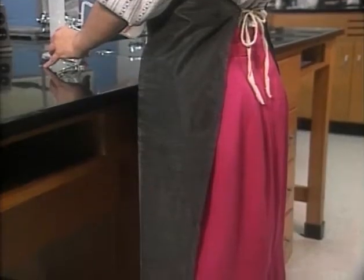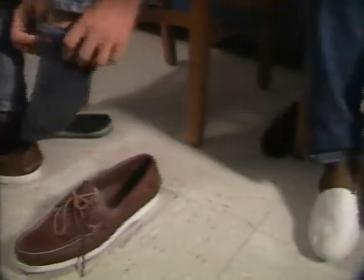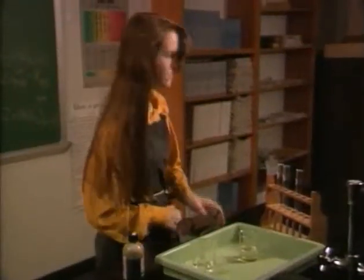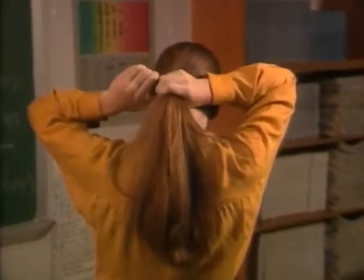Legs are vulnerable to chemical splashes and broken glass if you drop something, so long pants or a long skirt should be worn to protect them. Open shoes can't protect your feet from spills — closed leather shoes are much better. Shoes made of cloth or woven material can absorb spills and hold harmful chemicals against your skin.